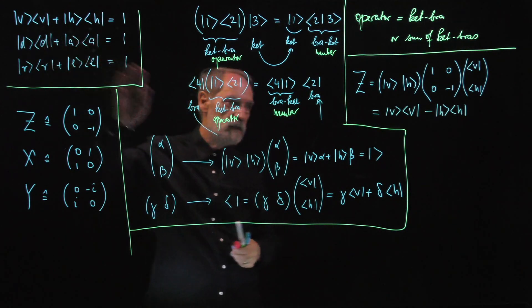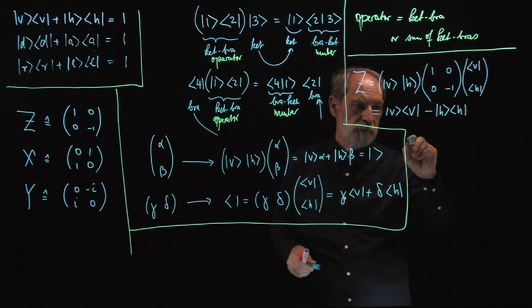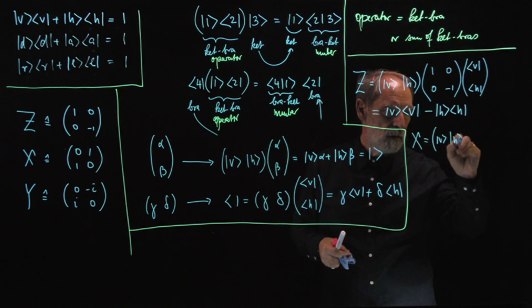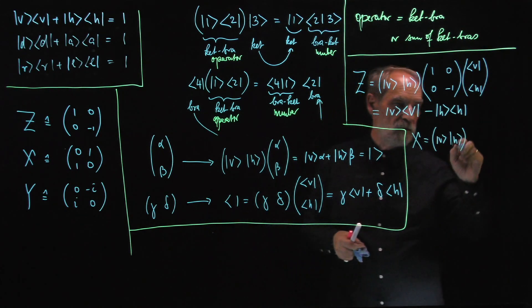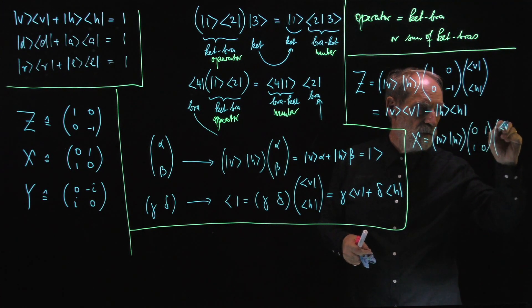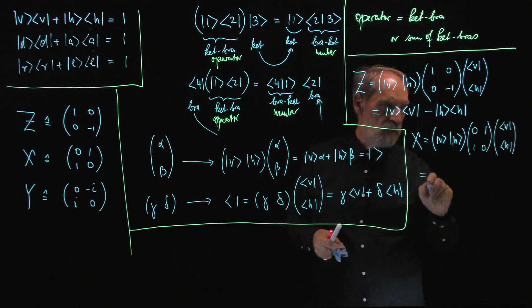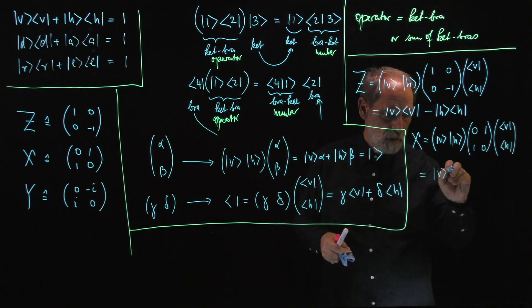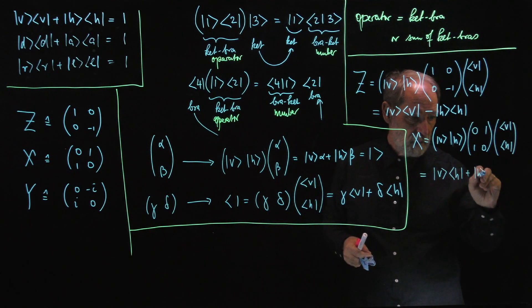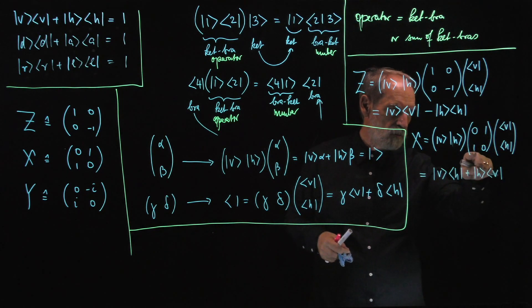So here for the completeness relation we have the sum, for the Z we have the difference. What about X? X is the V, H row of ket. Then we have the matrix, and then we have the V, H column of bras. As we work it out, we get the V, H ket-bra plus the H, V ket-bra. So this one is the V, H, and this one is the H, V.